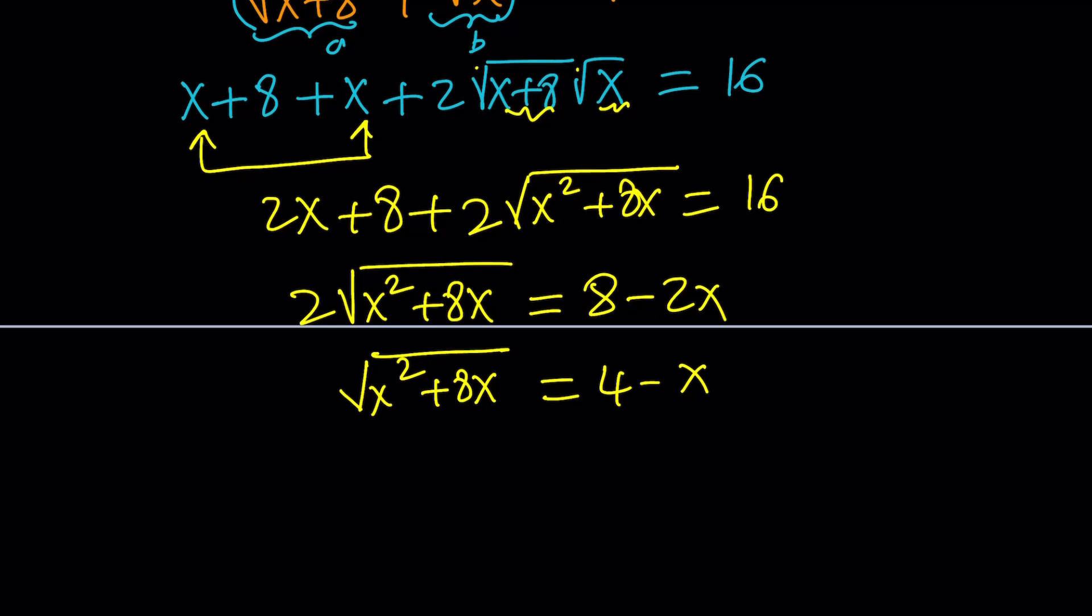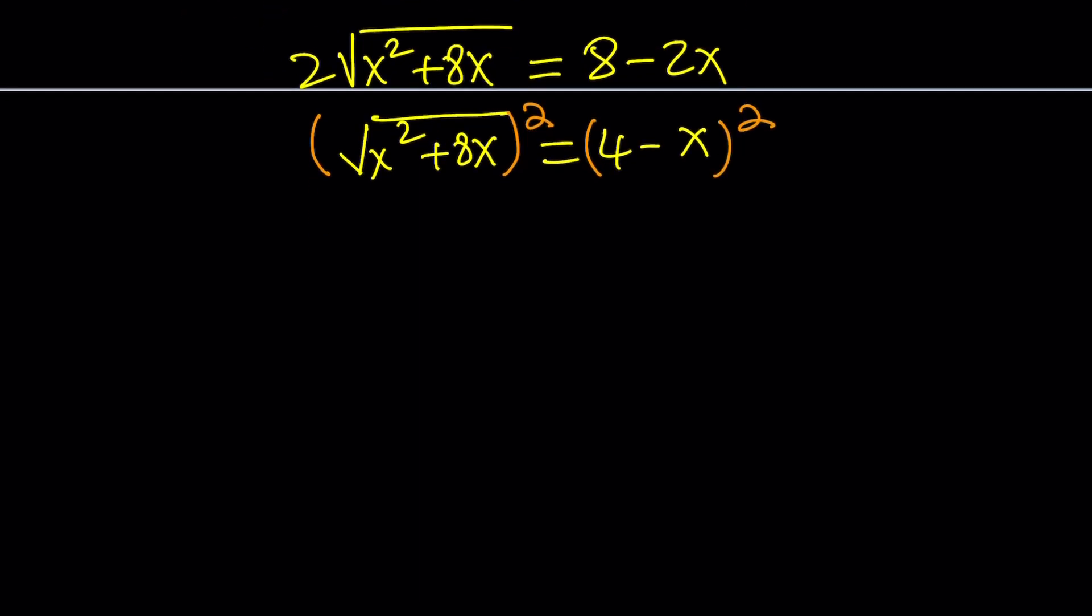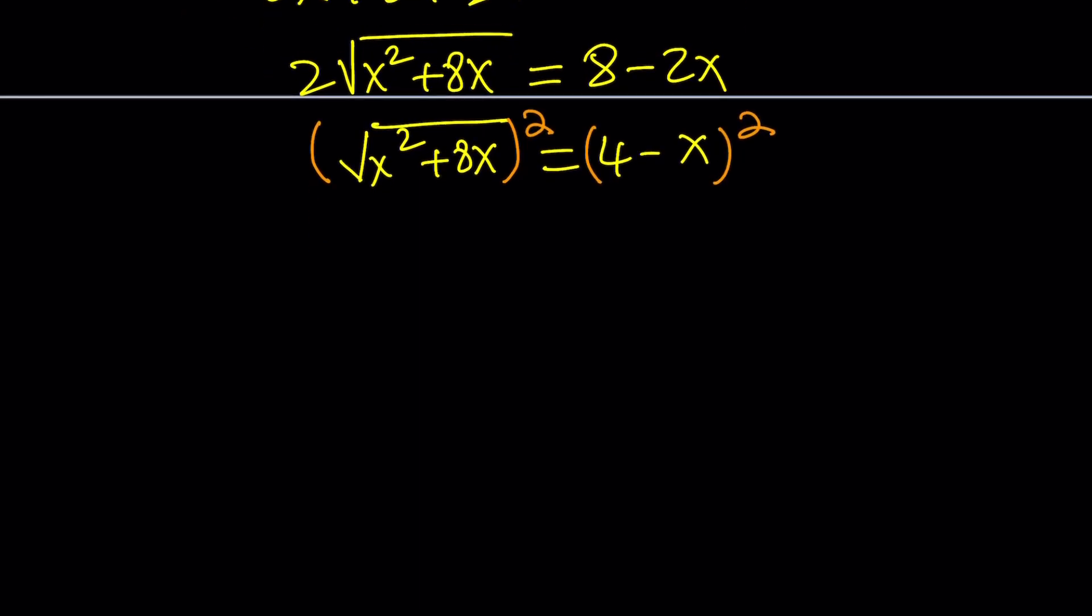At this point, you need to square both sides one more time. Again, squaring sometimes introduces extra solutions that are not part of the original equation. Now when you square this, you get rid of the radical that becomes x squared plus 8x. And on the right-hand side, you get something like a minus b squared: a squared plus b squared minus 2ab, which is 8x.